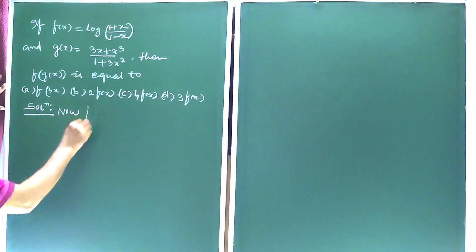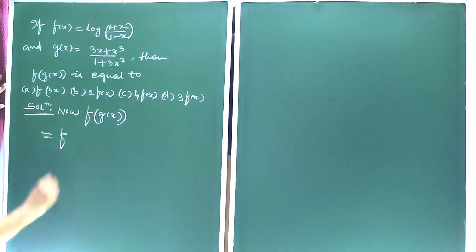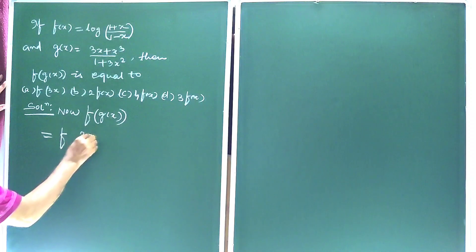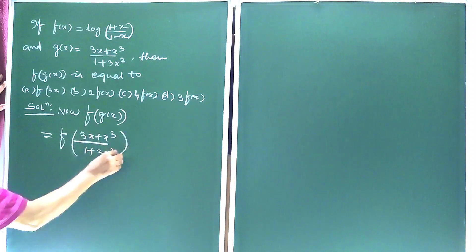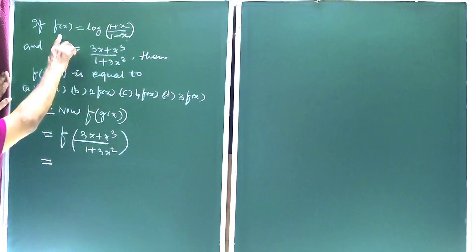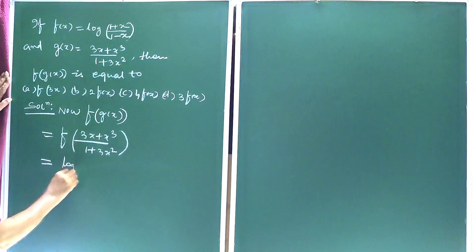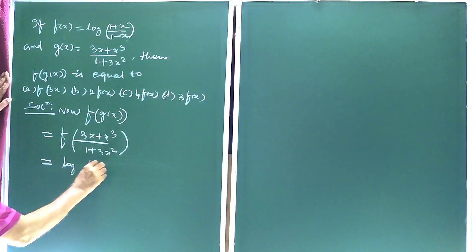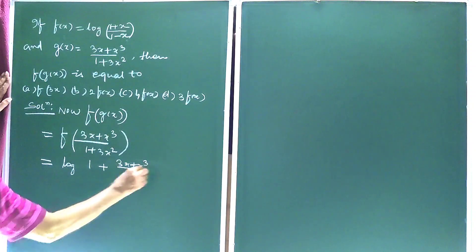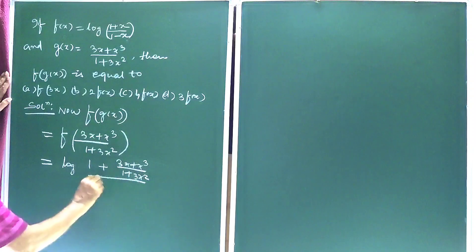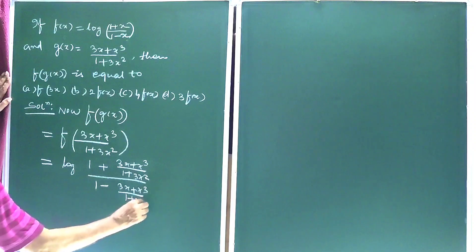f(g(x)) is equal to f of (3x + x³)/(1 + 3x²). Since f(x) = log((1 + x)/(1 − x)), we substitute x with g(x), giving log of [1 + (3x + x³)/(1 + 3x²)] divided by [1 − (3x + x³)/(1 + 3x²)].